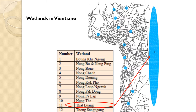As shown on the map, these are the wetlands in the capital city. We can see that there are 12 wetlands, but the Tha Duang Wetland is the largest one. All the sub-wetland water flows from the sub-wetlands into the Tha Duang Wetland, and after that the water runs off to the Mekong River.